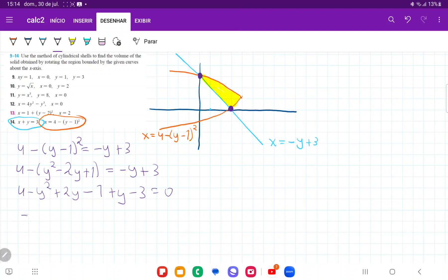And now I'm going to collect like terms. So I have that minus y squared, plus 2y plus 1, that gives us plus 3y and then 4 minus 1 minus 3, that gives us 0. So plus 0 is equal to 0.